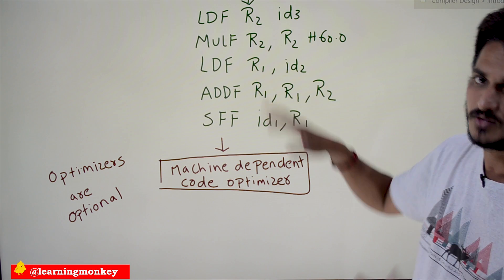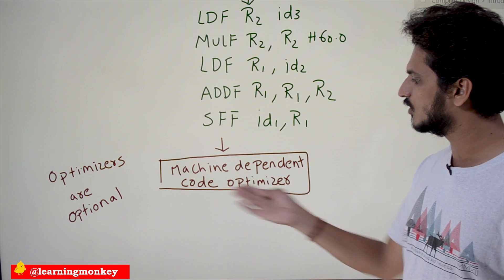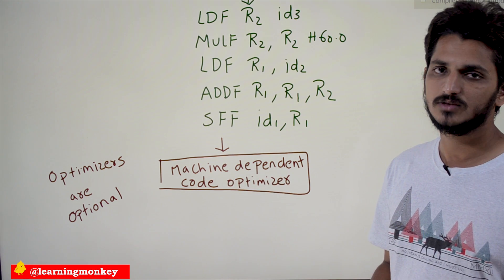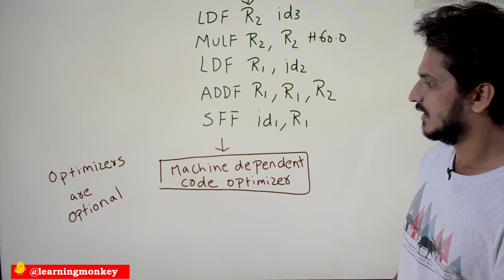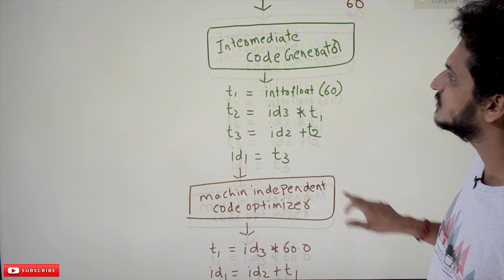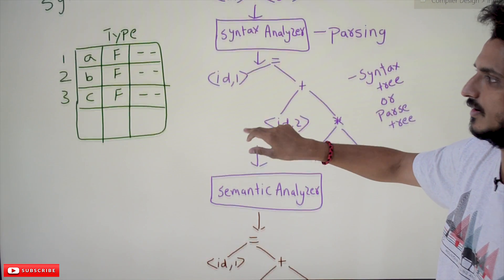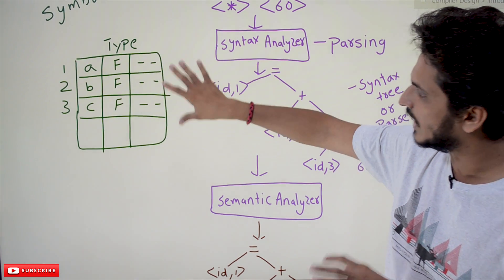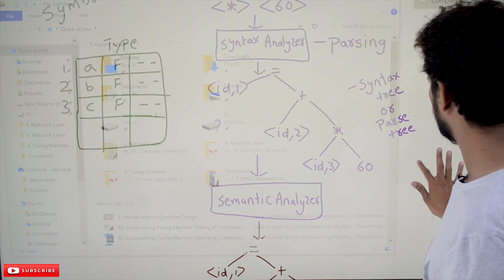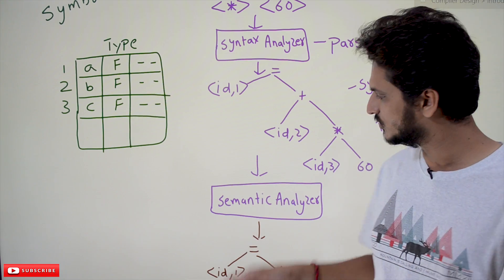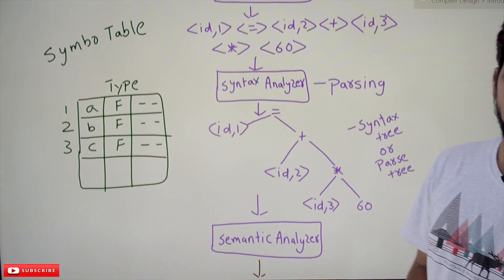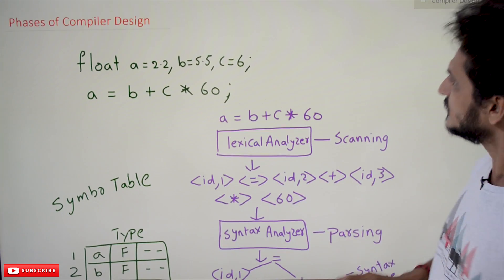The machine-dependent code optimization gives the final output — that is our machine-level language. These optimizers are optional. Every phase uses the symbol table, checking it and using the saved values to generate the different syntax trees. All these phases use the symbol table.